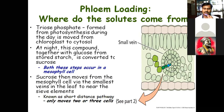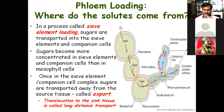Both these steps occur in the mesophyll cell, and sucrose then moves from the mesophyll cell via the smallest veins of the leaf to near the sieve element. There are two ways of movement of food material: the symplast way — movement through the cytoplasm — and the apoplast way, which is movement of water through the cell wall.